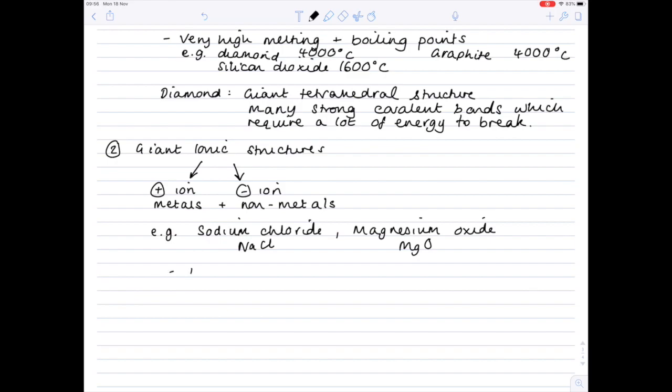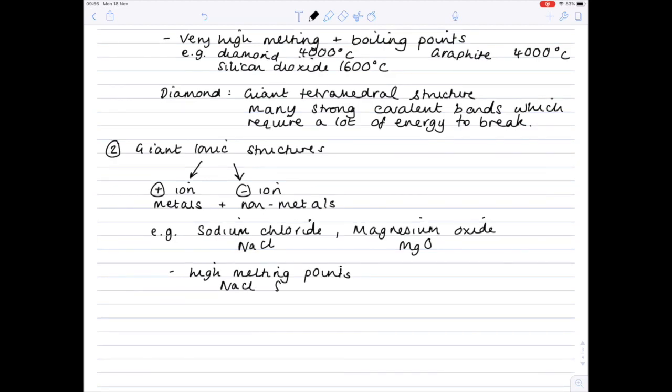Now they also have high melting points, not ridiculously high, it tends to be less than a thousand degrees. So for sodium chloride it's 801 degrees celsius. For potassium chloride it's 770 degrees celsius.